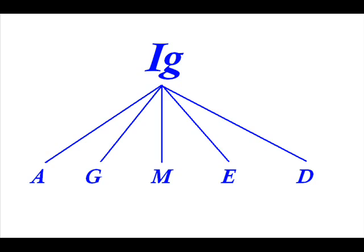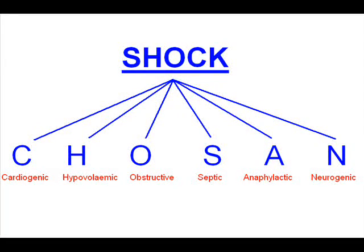Next, we'll talk about shock with the CHOSEN formula — just to remind you about the first letters of every important, life-threatening case. We have C for cardiogenic shock, H for hypovolemic shock, O for obstructive shock, S for septic shock, A for anaphylactic shock, and N for neurogenic shock.